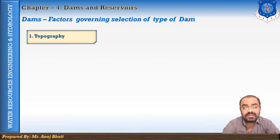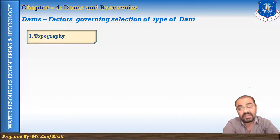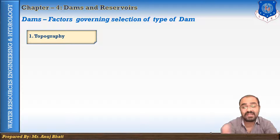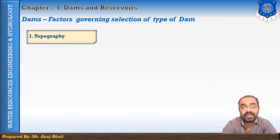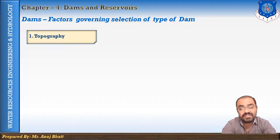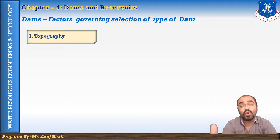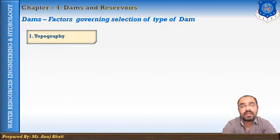A narrow V-shaped valley gives a minimum distance between the two end points and has a V-shape so the bottom would be narrow. At that particular stage you cannot construct an earthen dam, a rigid dam, or a gravity dam. At such a place the arch dam would be better, so that the whole load can be transferred to the end points.